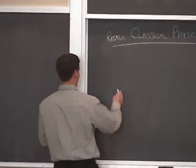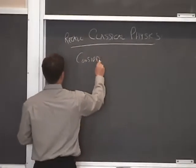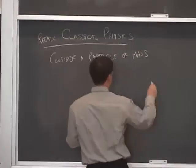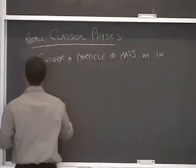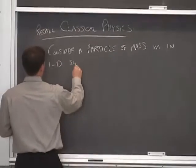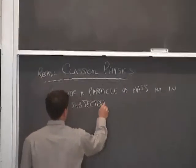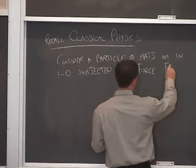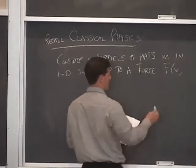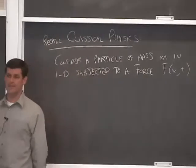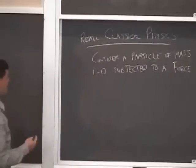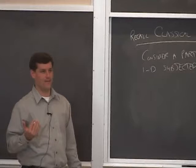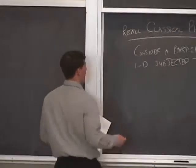So in classical physics, a typical problem that you would face is to consider a particle of mass m in one dimension subjected to a force, capital F. Since we're in one dimension, we only have to worry about one spatial coordinate x. But of course this could vary as a function of time as well, which is a second degree of freedom. Another way of constructing this problem is to say the mass is in a potential v, and the force then would be the partial of v with respect to x, the negative of that quantity.